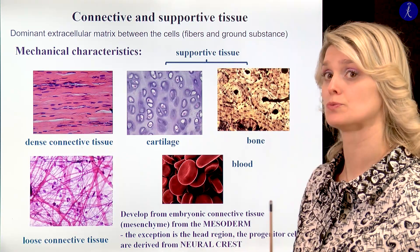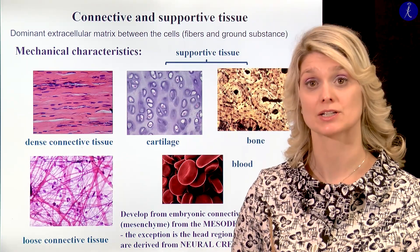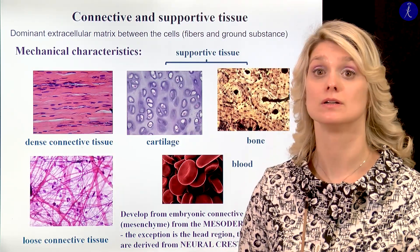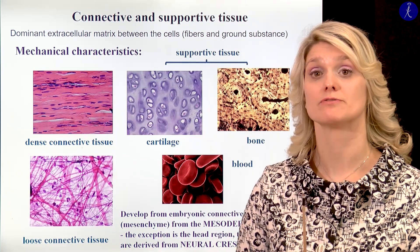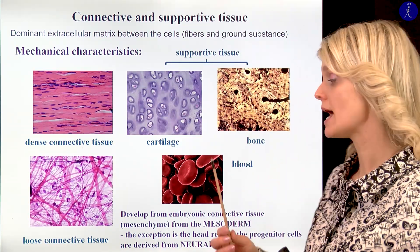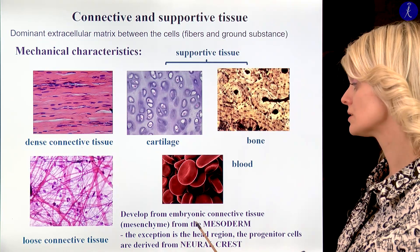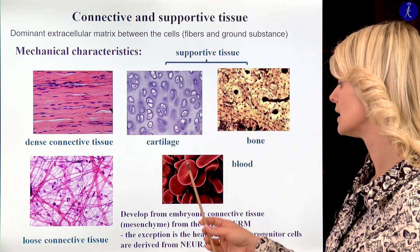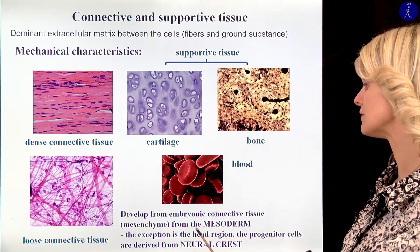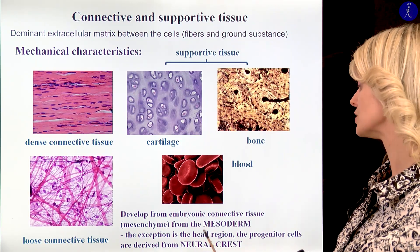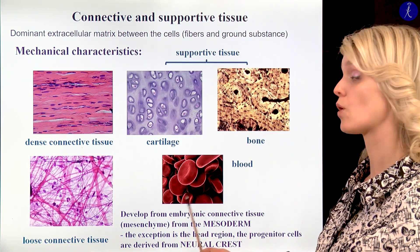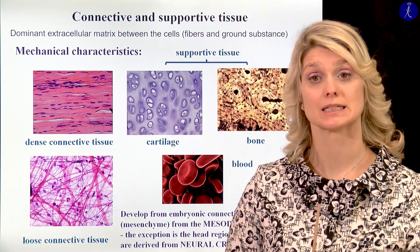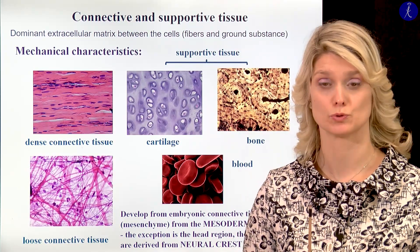It is really important to mention at the beginning — I know that you have no embryology lecture yet — but later you will learn the different development of the main tissue types. The connective tissue will originate from the mesoderm. But the connective tissue of the head region and its progenitor cells will originate from the neural crest. It is really important, but you will learn it later. Don't worry if you do not understand now.